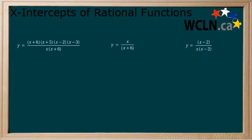Here we have three examples. The equations are already factored for you. Take a few minutes to see if you can determine where the x-intercepts will be for each. It is important to know that a rational function can have 0, 1 or multiple x-intercepts. Press pause and when you are ready, continue the video.